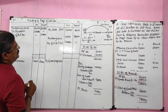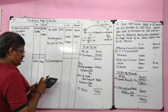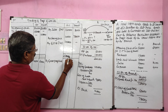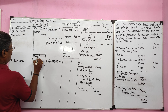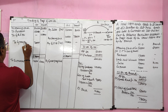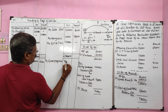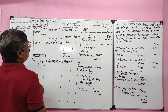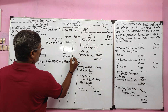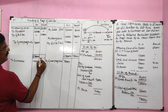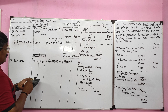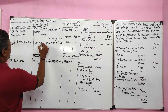Now we balance the trading account. For head office column: 1,60,000 plus 10,000 plus 1,08,000 equals 2,78,000 on credit side; debit side totals 2,00,000, so gross profit of head office is 78,000, transferred to profit and loss account. For branch: 80,000 plus 78,000 equals 1,58,000 credit side; debit side 30,000 plus 1,08,000 equals 1,38,000; so gross profit of branch is 20,000, transferred to profit and loss account.